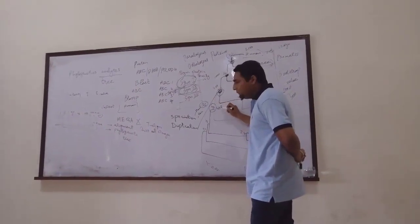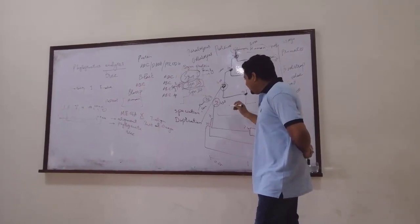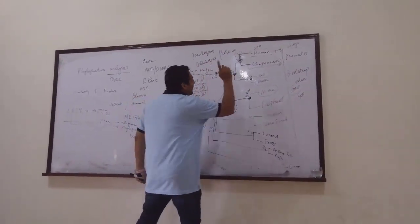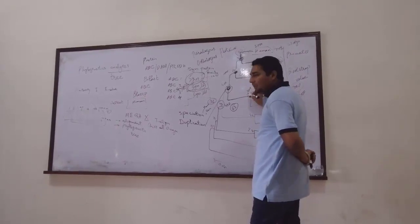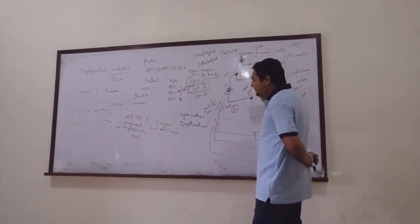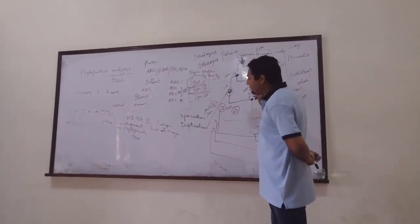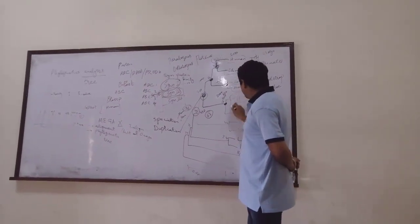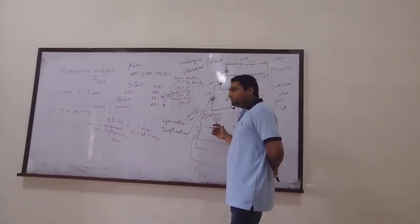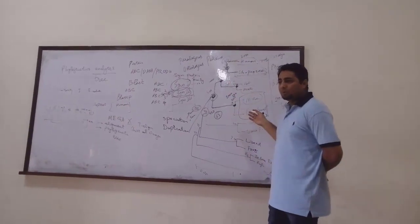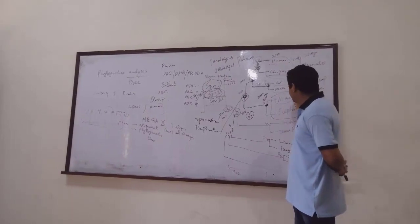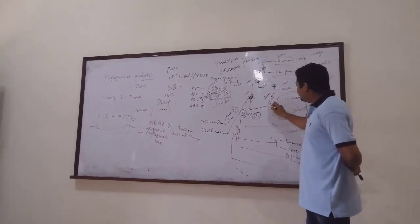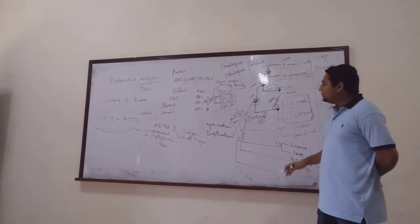A bootstrap value of 43 means only 430 times out of 1000. The minimum acceptable bootstrap value should be 65. Suppose if a node shows only 13 — it means from 1000 runs, the same sequence only appeared 130 times, and 970 times we don't have the same sequence. This means there is some problem with those two sequences and we have to change or realign them.